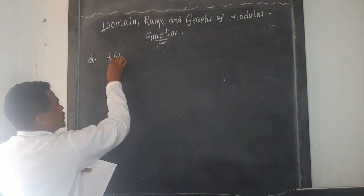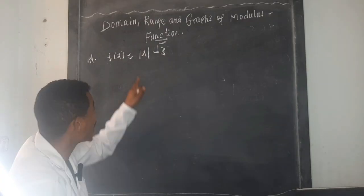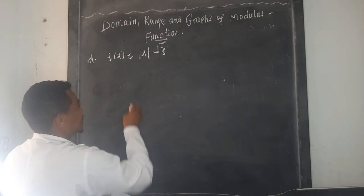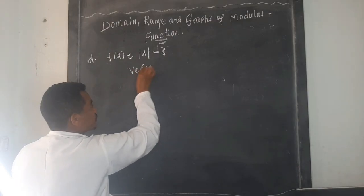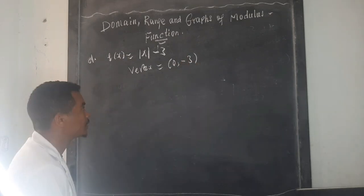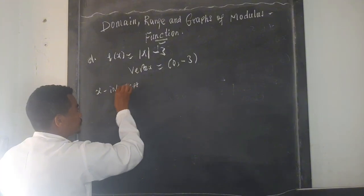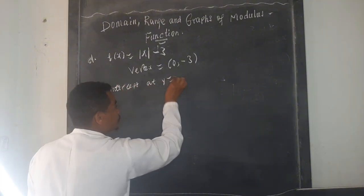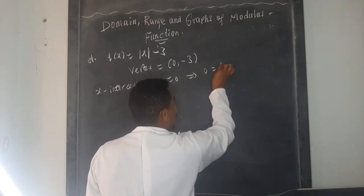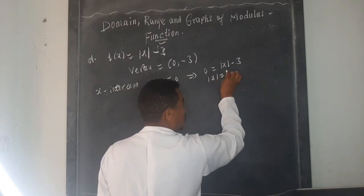Part D: f(x) = |x| - 3. The vertex is at (0, -3). To find the x-intercept, set y = 0: |x| - 3 = 0, so |x| = 3, which gives x = 3 or x = -3. So x-intercepts are (3, 0) and (-3, 0).